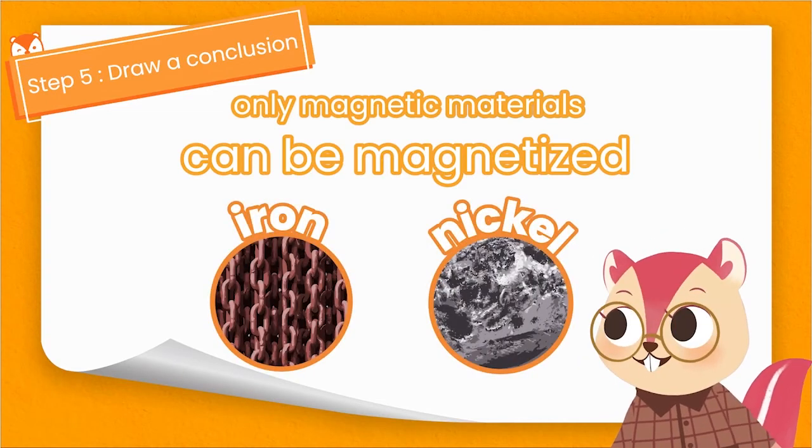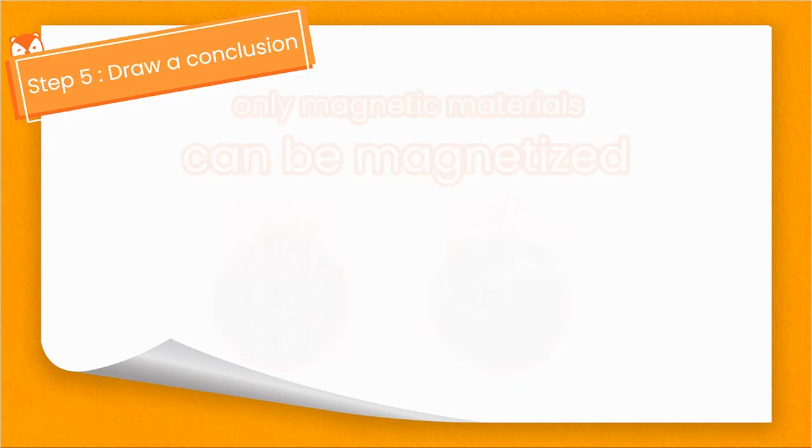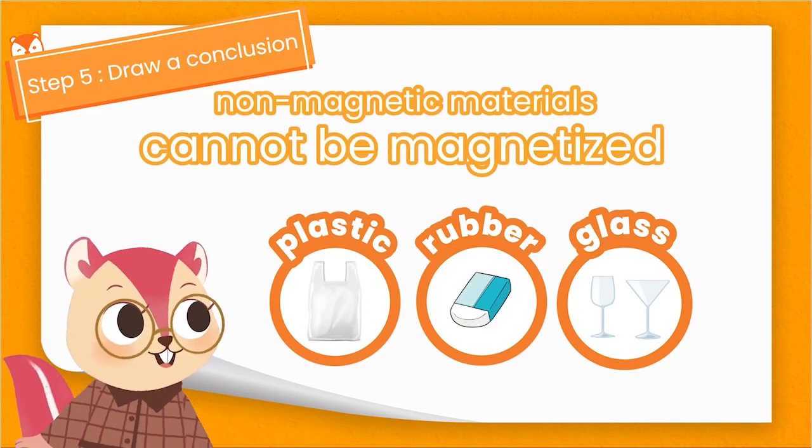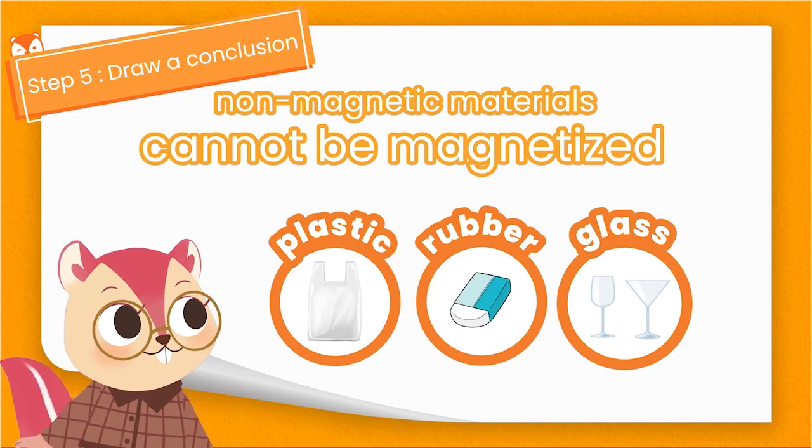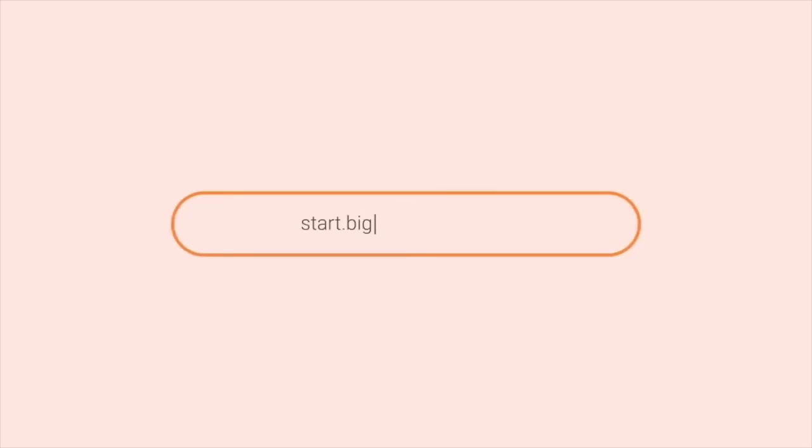Only magnetic materials like iron and nickel metal can be magnetized, whereas non-magnetic materials like rubber, plastic, or glass cannot be magnetized. Want to watch the full video? Sign up now and get started with your own free trial!